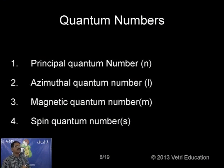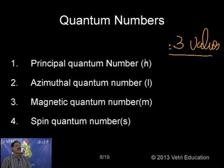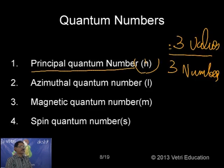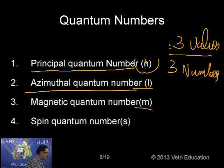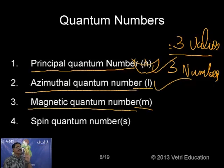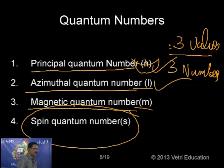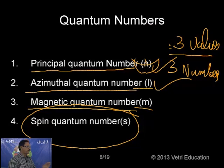Now let's discuss quantum numbers. When solving the Schrödinger equation, three numbers are obtained: n — the principal quantum number, l — the azimuthal quantum number, and m — the magnetic quantum number. These three values are obtained from the Schrödinger wave equation. The spin quantum number is the fourth, obtained only from spectroscopy.